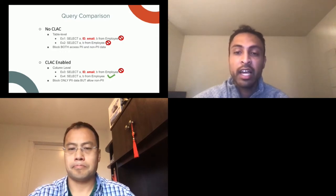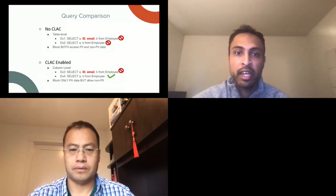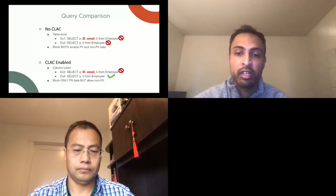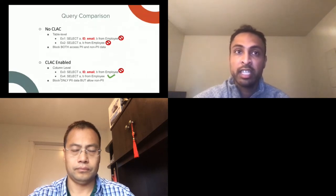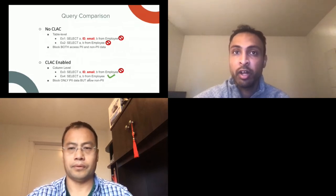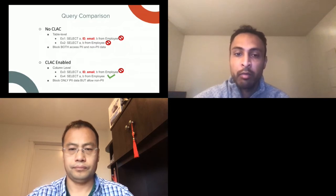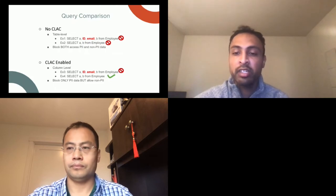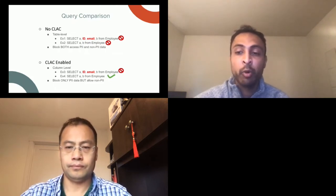Without CLAC, we have to block all access to that table — both PII and non-PII access. In the CLAC-enabled world, example three shows we still reject the query when the user tries to read sensitive columns like ID and email. But in example four, when the user only queries non-sensitive columns, the query is permitted. Basically, we only block actual PII queries but allow non-PII queries to pass. I'll now pass to Xinli, who will go more in depth on how CLAC fits into the typical stack and dive into the Parquet internals.